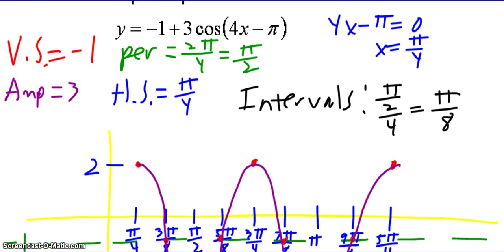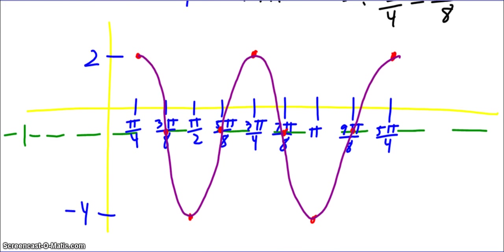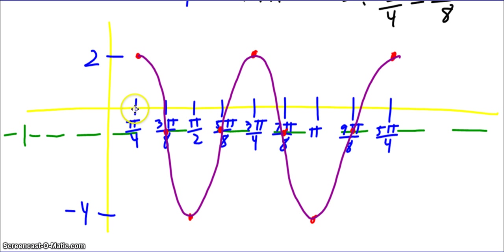First I drew the x and y axes, putting the x-axis a little bit above center because of the vertical shift of negative one. With an amplitude of three, I go up to positive two and down to negative four. Then, starting at the horizontal shift of pi fourths, I add pi eighths each time to get three pi eighths, pi halves, five pi eighths, three pi fourths, seven pi eighths, pi, nine pi eighths, and five pi fourths.